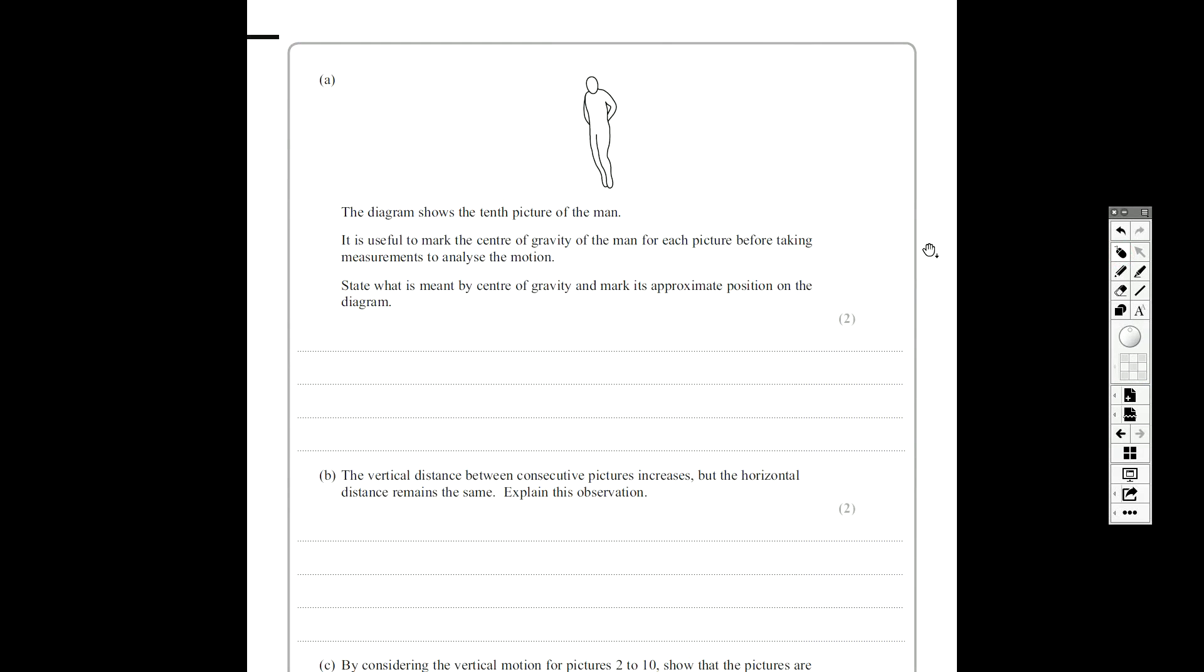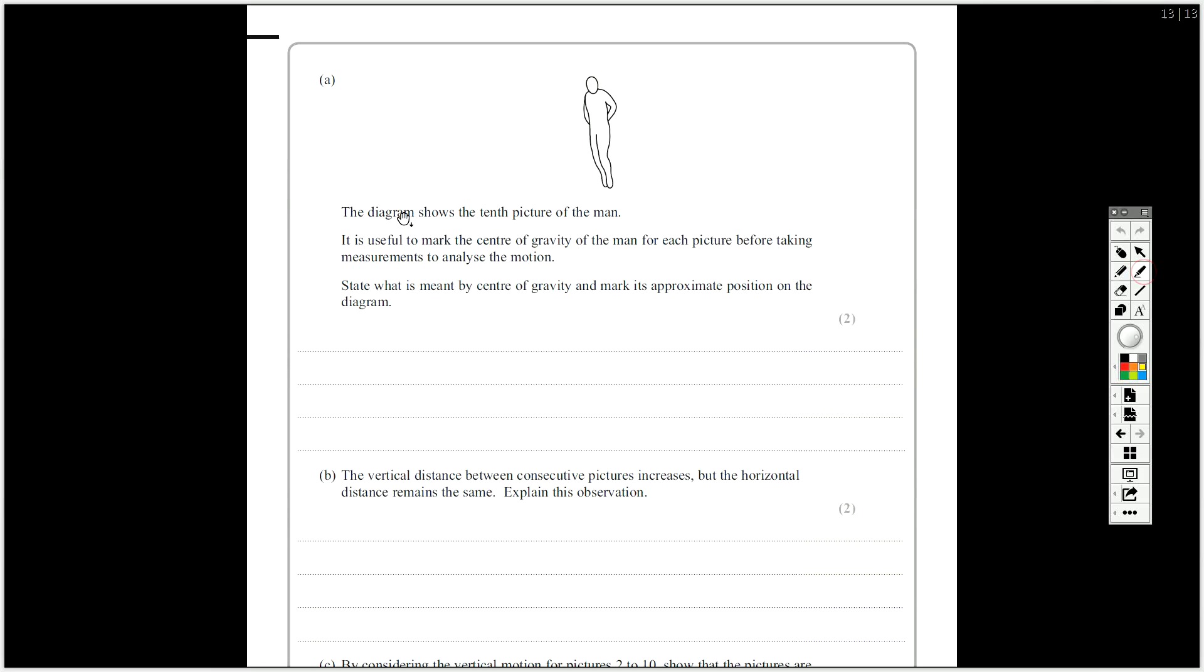The first part has actually got nothing to do with that. The first part just asks you, the diagram shows the tenth picture of the man, and it's useful to mark the centre of gravity for the man for each picture before taking measurements to analyse the motion, so this is just about an accurate technique to use a photograph like that. State what's meant by the centre of gravity, and mark its appropriate position on the diagram.